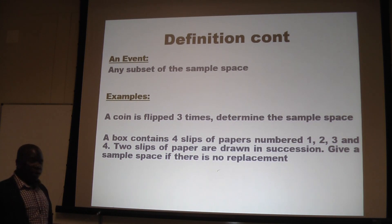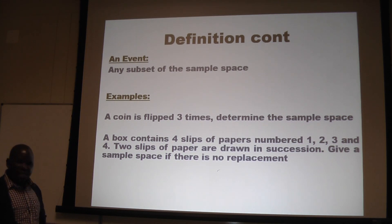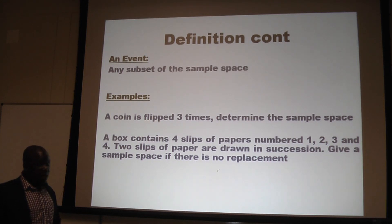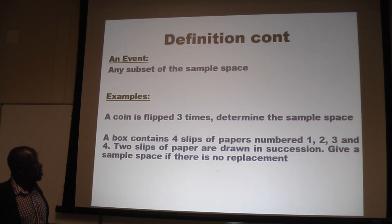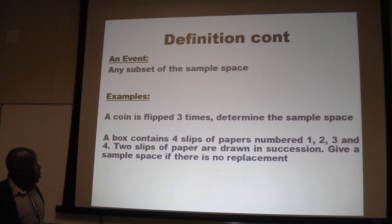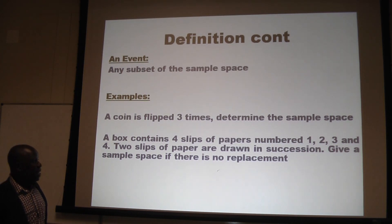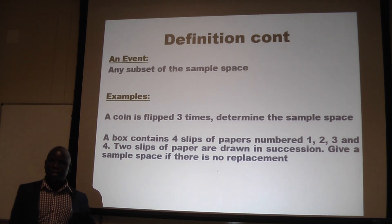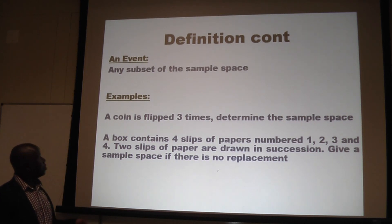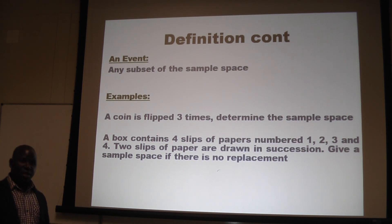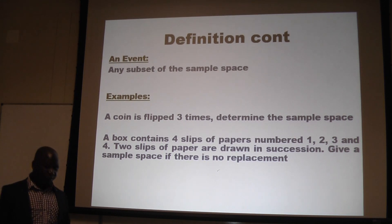Let's look at an example. If we flip a coin three times, what is the sample space? Also, if we have a box containing four slips of paper numbered one, two, three, and four, and someone picks two slips one after the other, give the sample space assuming that there is no replacement. We are going to respond to these and see what a real sample space is and what an event is.